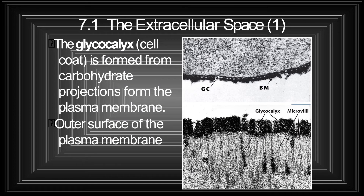In this slide, students, you can see the extracellular space clearly. The glycocalyx — that is the cell coat — is formed from carbohydrate projections from the outer surface of the plasma membrane. You can see the glycocalyx being shown, and there are microvilli present which increase the cell membrane area. When this area is increased, it reacts with the environment.